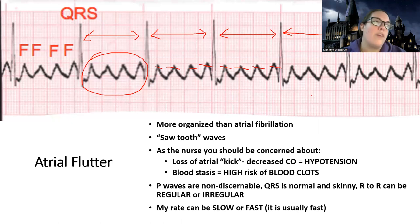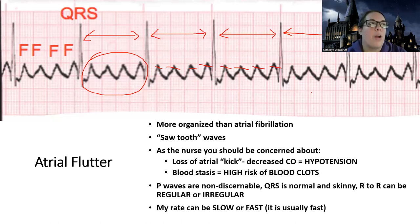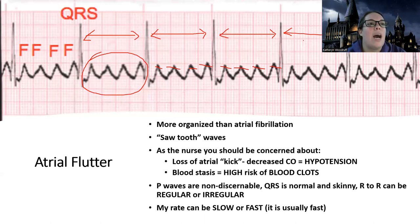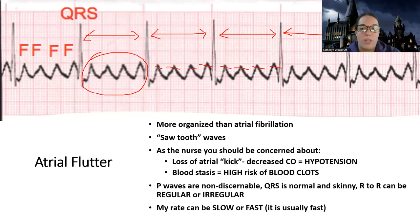AFib and flutter — don't confuse yourself or see these as two completely different rhythms. These are effectively the same problem. The only difference is that flutter can be a little bit more organized — it has more of those sawtooth or flutter waves — but everything else is exactly the same: same risks, same problems. Because the rhythm is more organized, sometimes there's less hypotension, but you don't need to know that, and we're not going to ask you to differentiate between AFib and flutter.